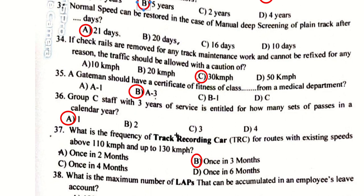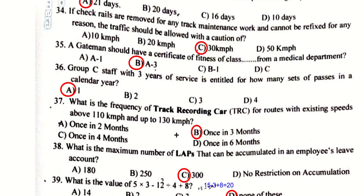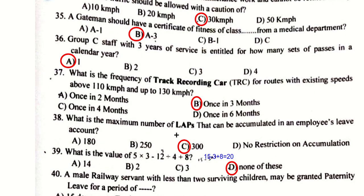A gateman should have a certificate of fitness of Class A3 from the medical department. A Group C staff with three years of service is entitled to one set of passes in a calendar year, because three passes are given only after five years of service completion.